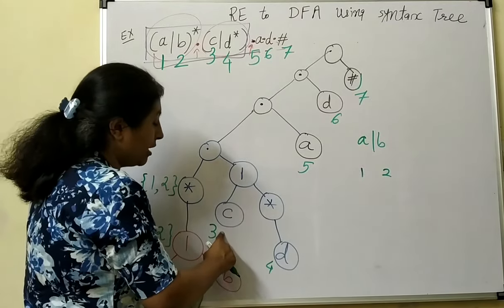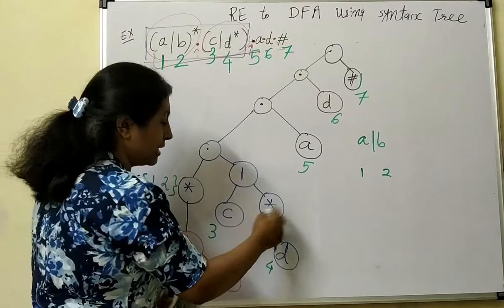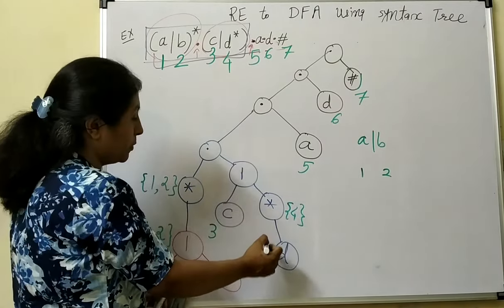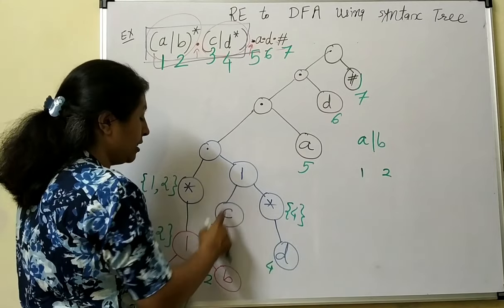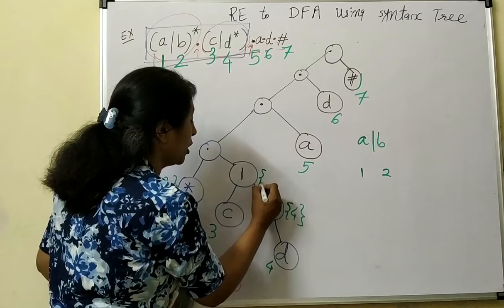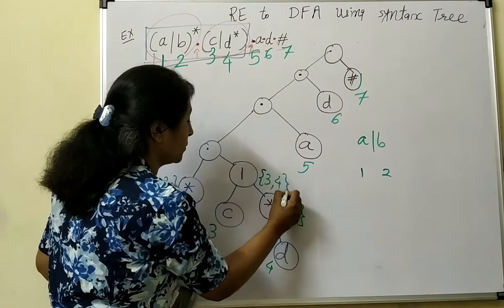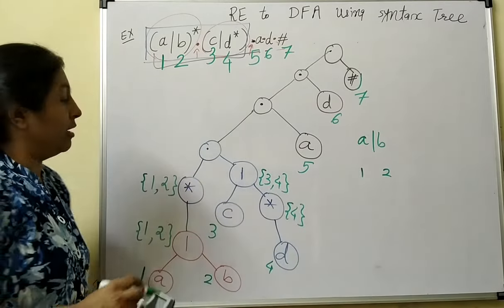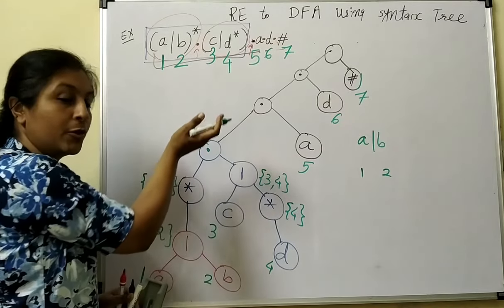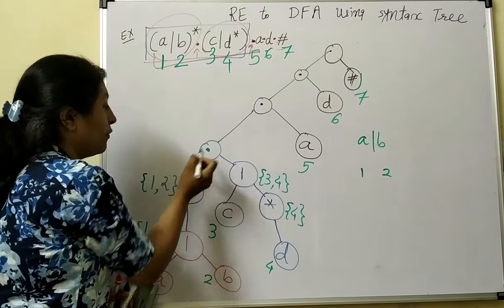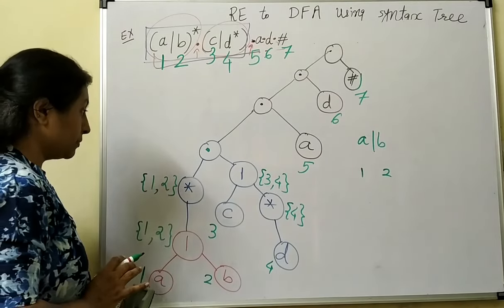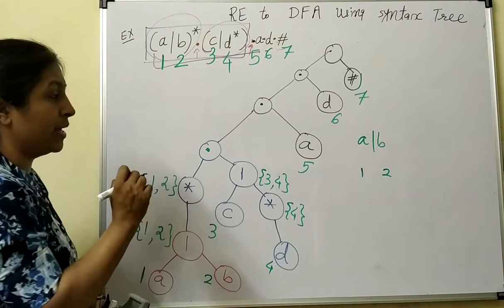Similarly, symbol 3 is a leaf node. For the Kleene's closure node, its first position is that of its child node. For the union node below it, either symbol 3 or symbol 4 can come at first position. Next, for concatenation we move from leaf node to root node and must refer to the rules of nullable.